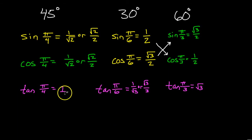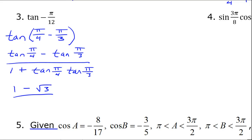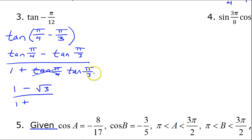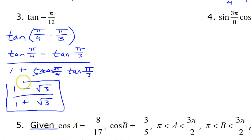Tangent(π/4) is 1 and tangent(π/3) is √3 — memorize all this from the chart. For the denominator I have 1 plus tangent(π/4), which is just 1, so I can disregard that since 1 times anything is itself, times tangent(π/3) which is √3. So I have (1 − √3) / (1 + √3), and I'm going to go ahead and call this the final answer.